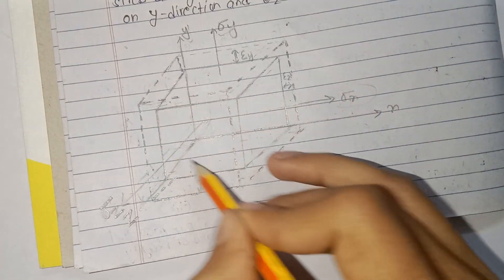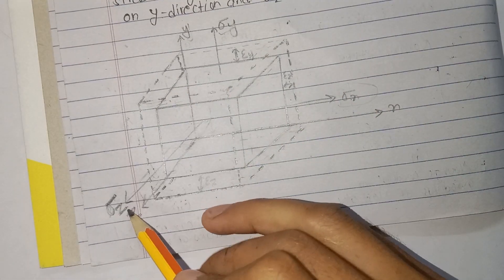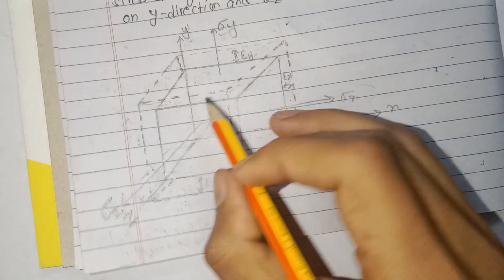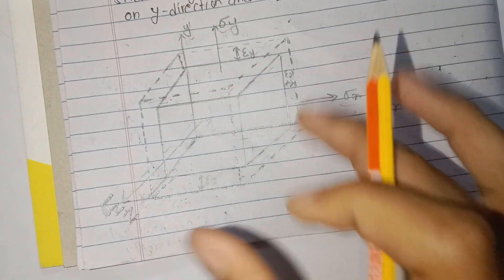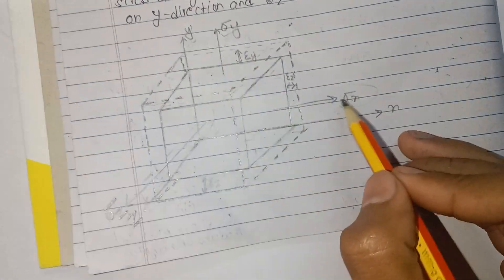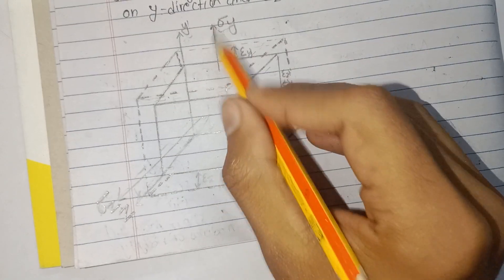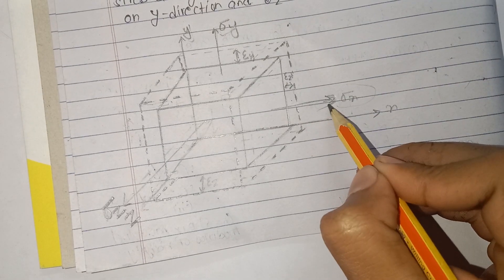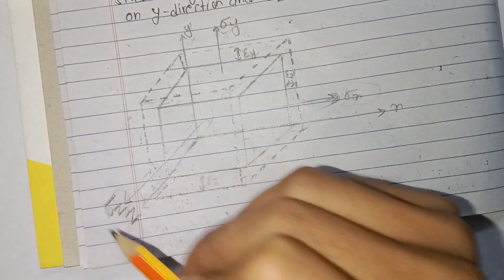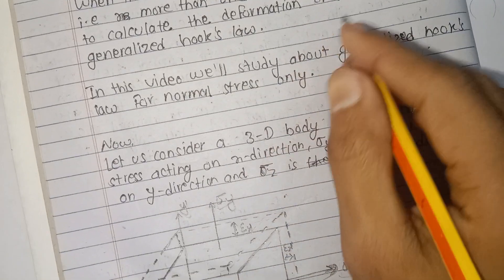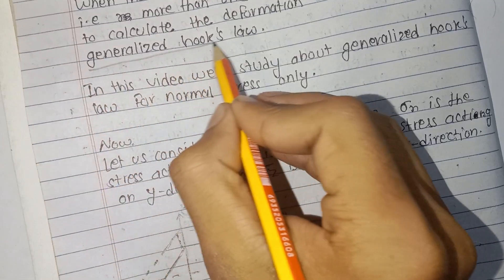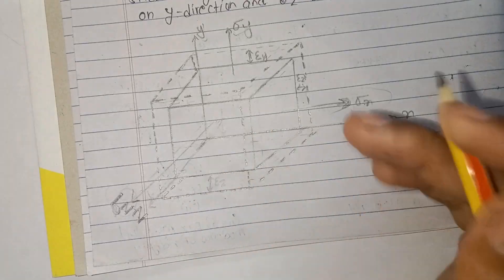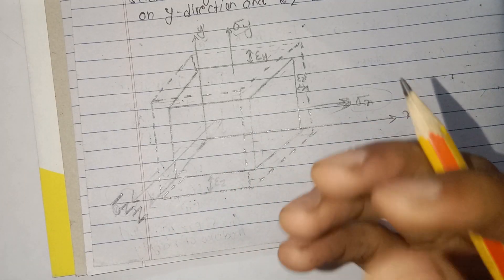Consider a three-dimensional body. There is stress acting on the x-axis, stress acting on the y-axis, and stress acting on the z-axis. This is the multi-axial state of stress — sigma x, sigma y, and sigma z.